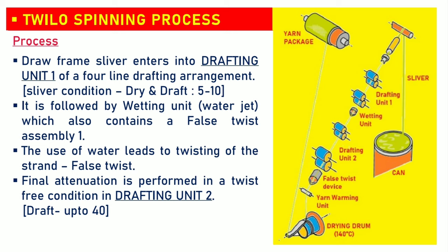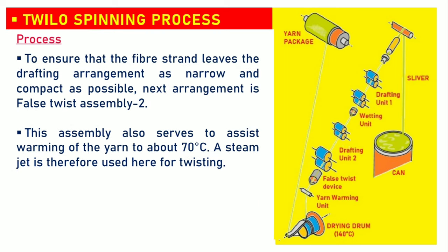This draw-frame sliver enters into drafting unit 1 of a four-line drafting arrangement. Here, the sliver condition is dry and the draft is in the range of 5 to 10. It is followed by a wetting unit, which also contains a false twist assembly 1. The use of water leads to twisting of the strand — false twist. Final attenuation is performed in a twist-free condition in drafting unit 2, where the draft range is up to 40, to ensure that the fiber strand leaves the drafting arrangement as narrow and compact as possible.